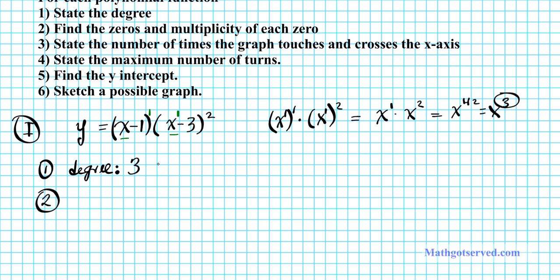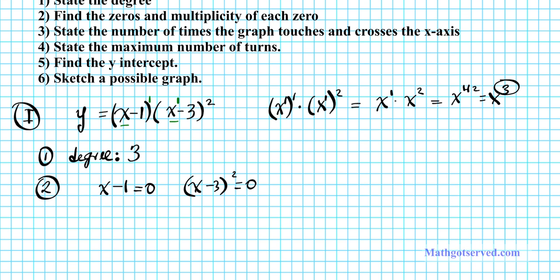Number 2: we have to find the zeros. To find the zeros, take each quantity, set it equal to 0, and solve. The quantity x minus 1 has a power of 1, so the multiplicity is 1. Setting x minus 1 equal to 0 and adding 1 to both sides gives x equals 1. So the first zero is x equals 1 with multiplicity 1.